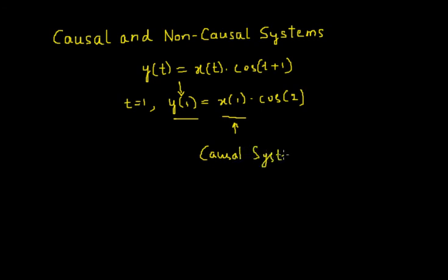The given system is a causal system. It is not depending on any future values. Hence, it is clearly a causal system. But one may have a doubt about cos(t+1). Cos(t+1) is just a function. It is not related in any way to the input x(t). So cos(t+1) is completely a different value and doesn't play any role while determining causality.